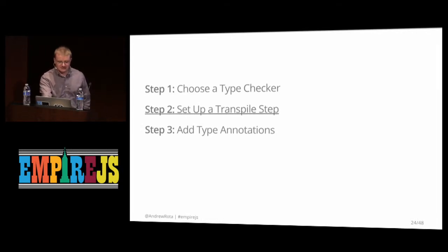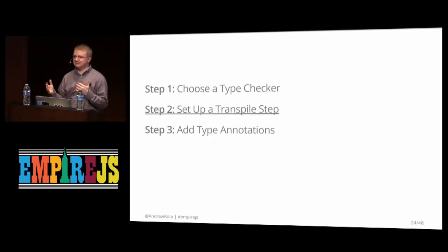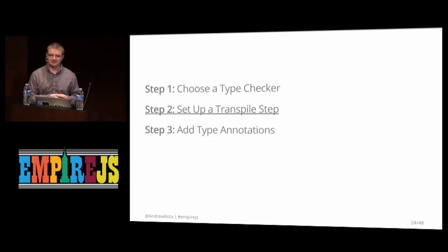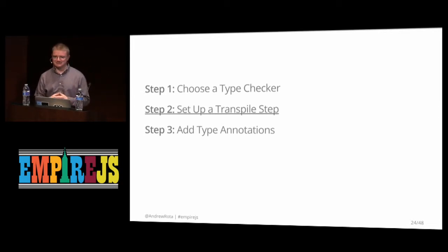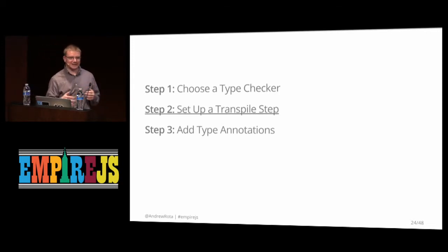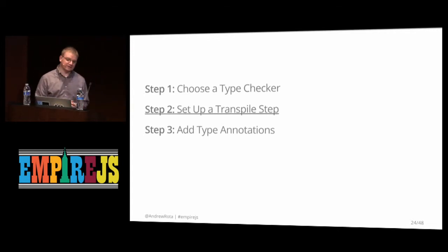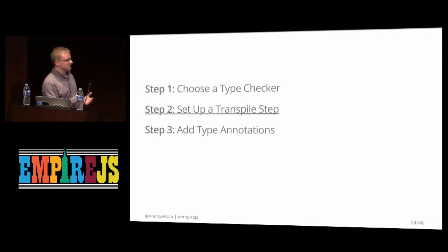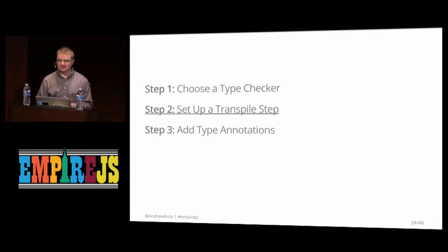With the standard implementations of either TypeScript or Flow, you need a transpile step. How many of you are using some sort of transpile step in your JavaScript right now? It's becoming the norm — you're frequently not writing vanilla JavaScript anymore. You might be writing CoffeeScript, JSX with React, or ES6 with Babel, transpiling down to ES5. A transpile step is a necessary part of most workflows today.